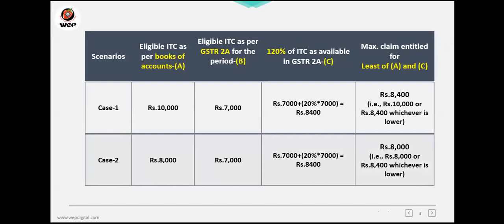Case two: as per your books, eligible ITC is 8,000. As per GSTR 2A, it is 7,000. 120% of 7,000 becomes 8,400. Comparing 8,000 with 8,400, the lower value is 8,000, so you are allowed to claim 8,000. The rule is: calculate 120% on your GSTR 2A, compare with books of accounts, and take whichever is lower.